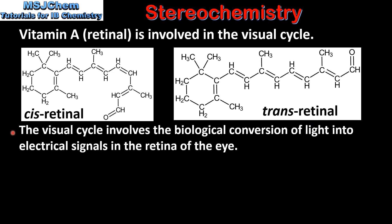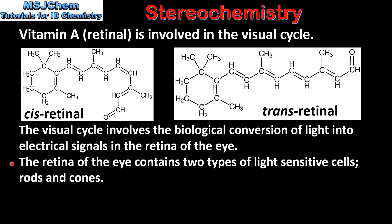The visual cycle involves the biological conversion of light into electrical signals in the retina of the eye. The retina of the eye contains two types of light sensitive cells: rods and cones.